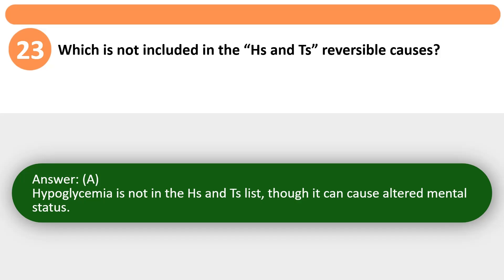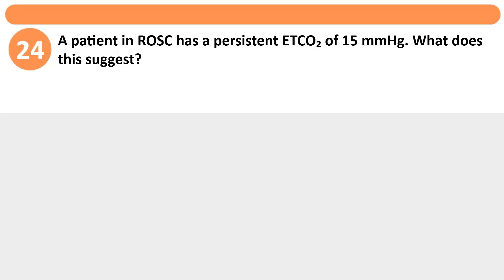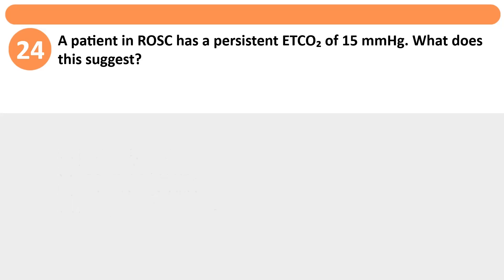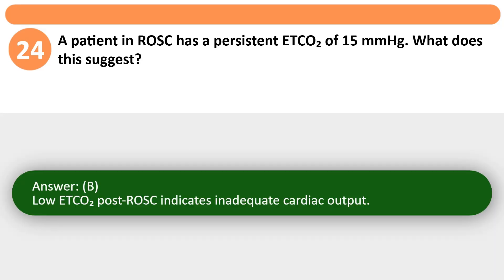A patient in ROSC has a persistent ETCO2 of 15 mmHg. What does this suggest? A. Excellent perfusion. B. Poor cardiac output. C. Normal oxygenation. D. Adequate tidal volume. Answer: B. Low ETCO2 post-ROSC indicates inadequate cardiac output.